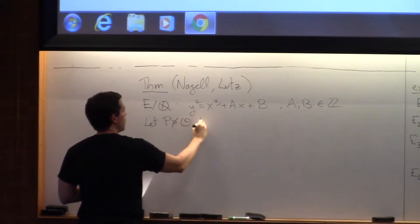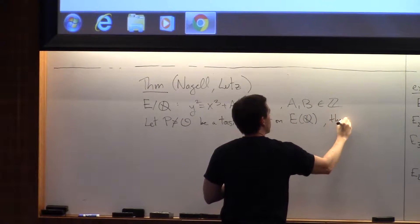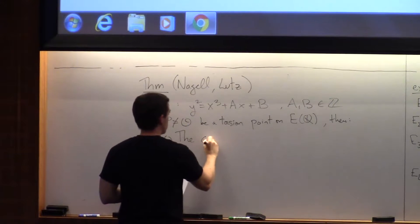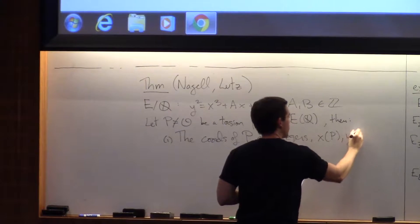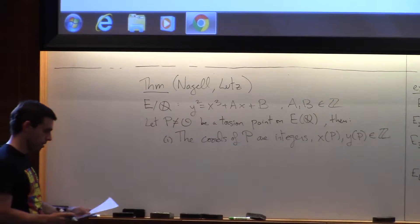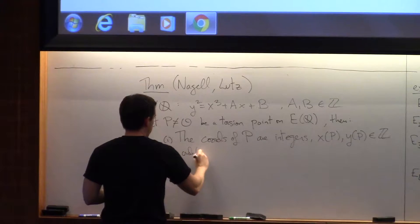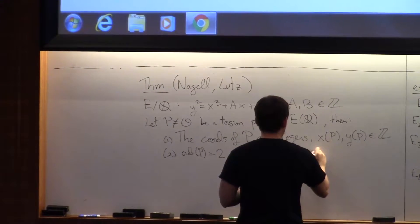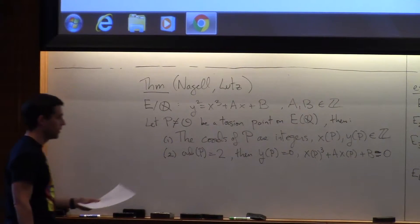So you have it in short Weierstrass form, and let P not O be a torsion point on E. Then, first of all, what Jamie asked, the coordinates are integers. Both the x-coordinate and the y-coordinate are integers. And that is already a huge relief. That makes our life a lot easier to find them.